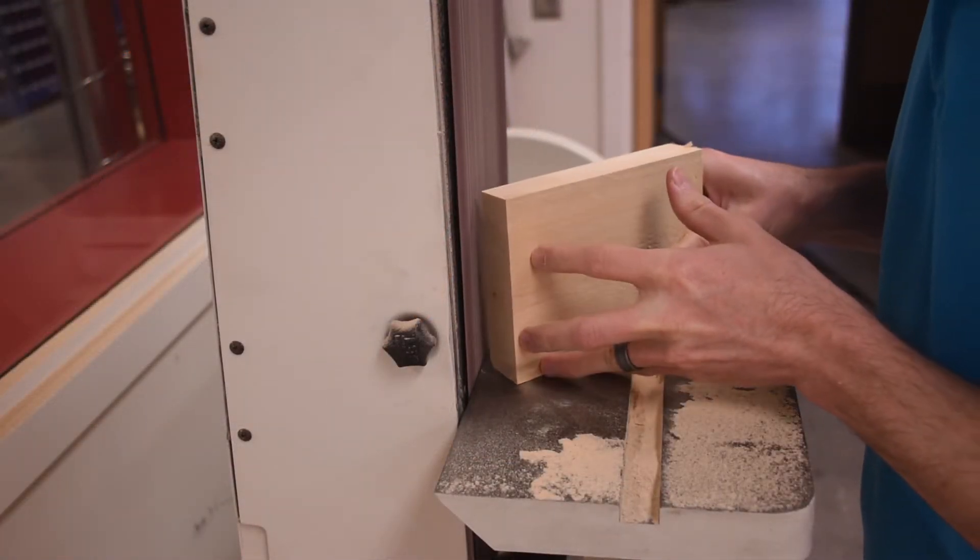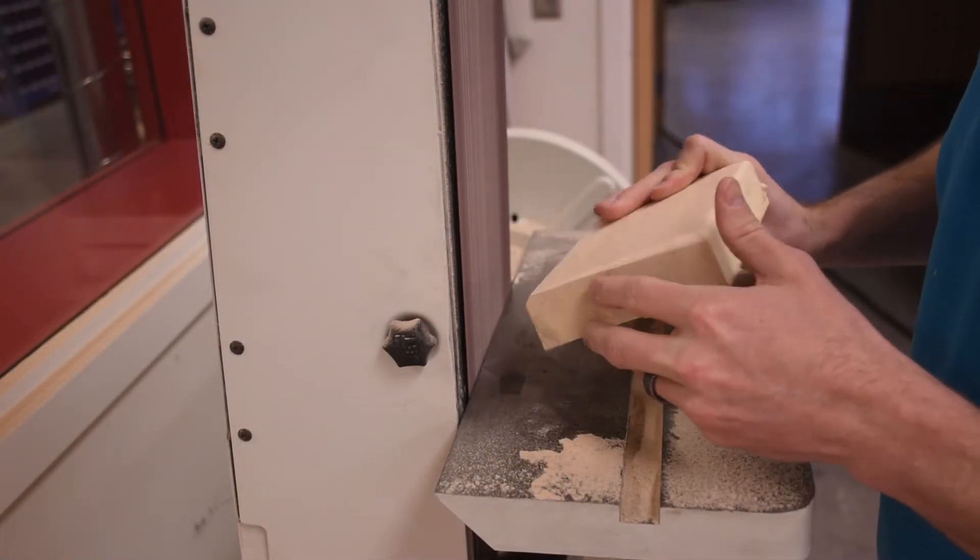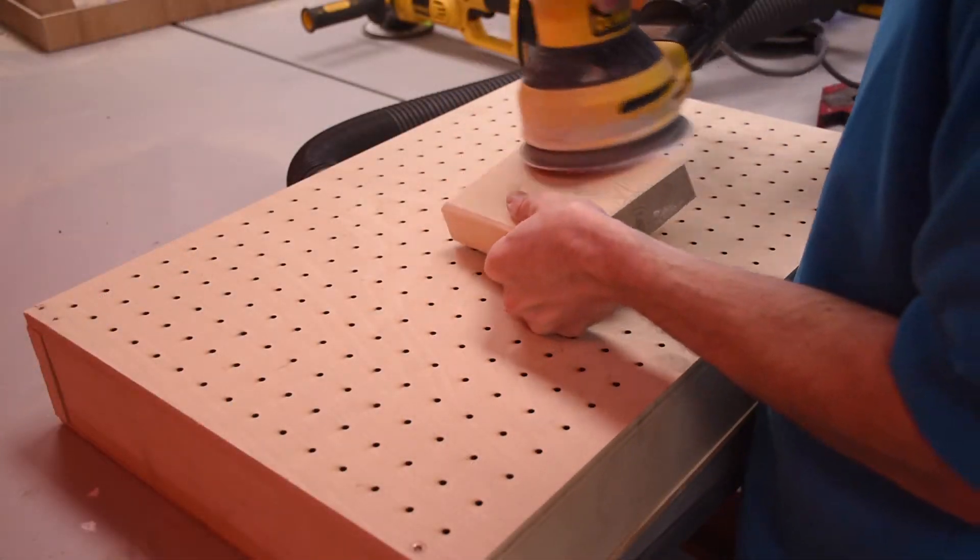Once the mold block was cut, I needed a little something to take the edge off. Two somethings actually. Molds don't really like sharp edges.